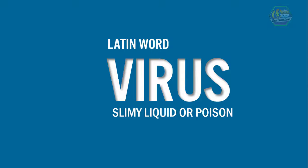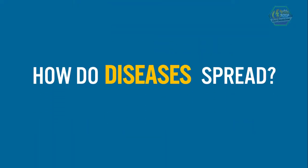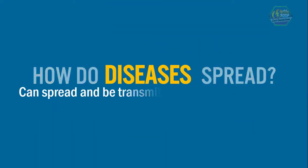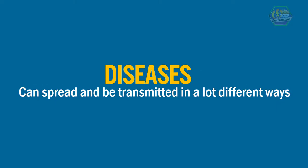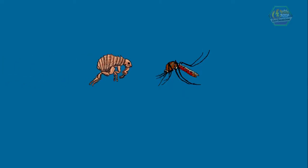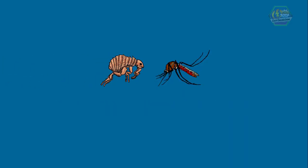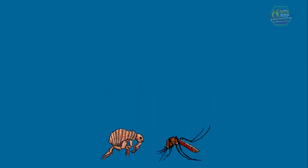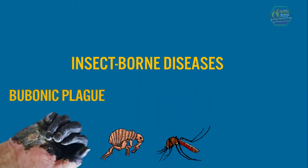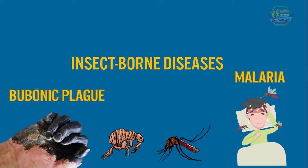Since diseases are the cause, the question is: how do diseases spread? Diseases can spread and be transmitted in a lot of different ways, so beware. In some cases, insects can be a reason, since they can carry diseases and transmit them from person to person. Small insects can carry insect-borne diseases like the bubonic plague and malaria.